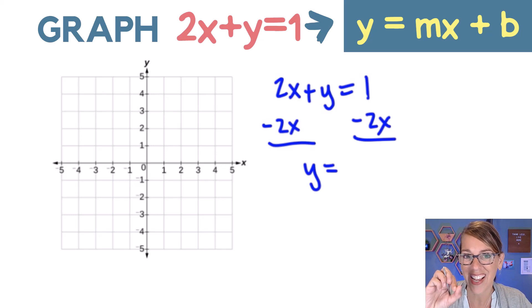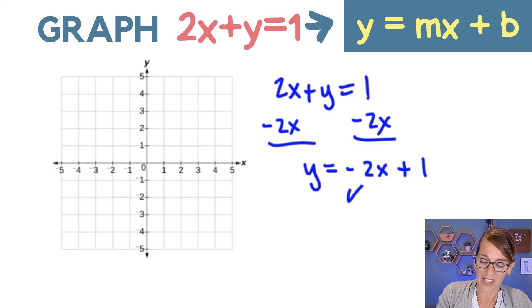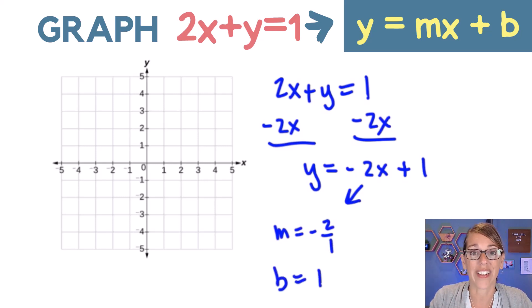I've got the 1 and the negative 2x. Now I want that form mx plus b, so I'm going to write the negative 2x first. That one is really a positive 1, so I get plus 1. This tells me that I've got a slope of negative 2, or negative 2 over 1, and a y-intercept of 1.